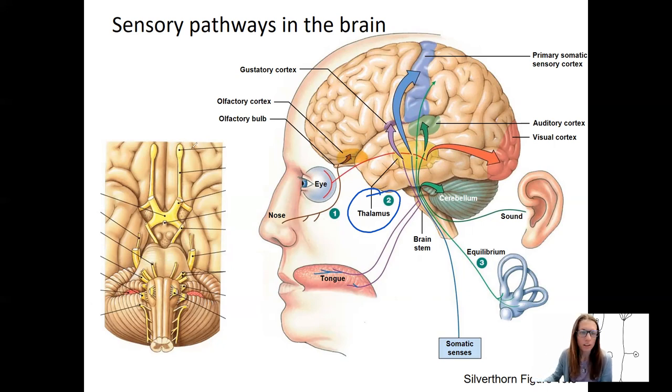So first, let's just start up front here, olfactory. Cranial nerve one that is here, going to the nose, the olfactory bulb. We'll talk about where this goes. This is actually one sense that doesn't really have a primary cortex for it. It's going to be closely connected with the limbic system, emotions and memories.